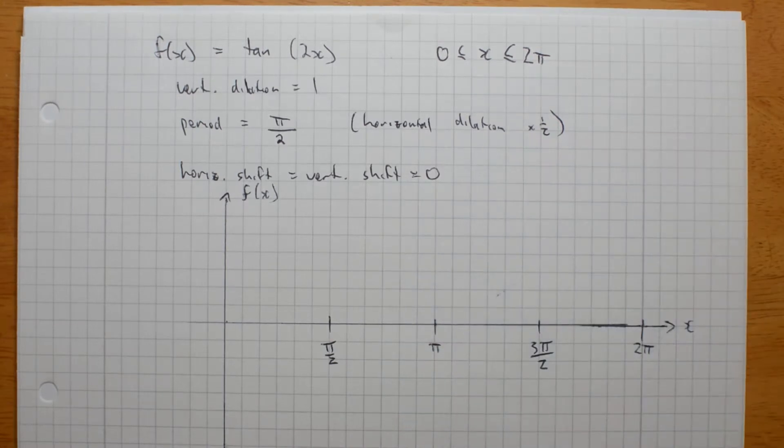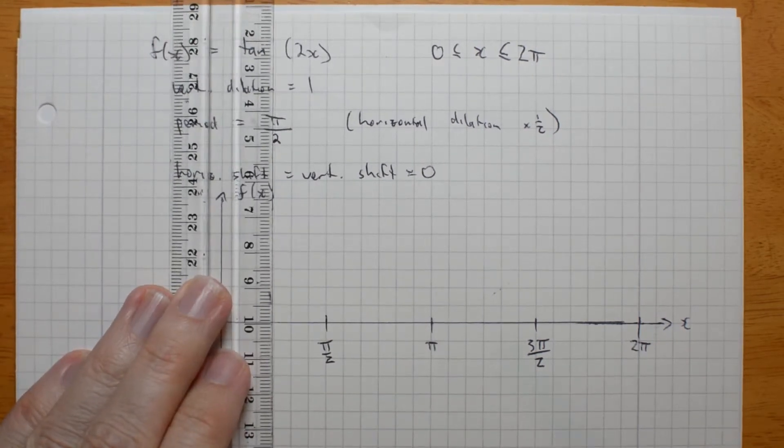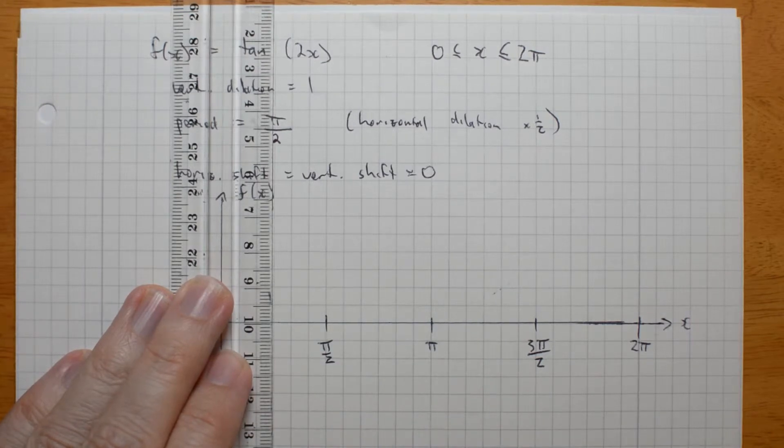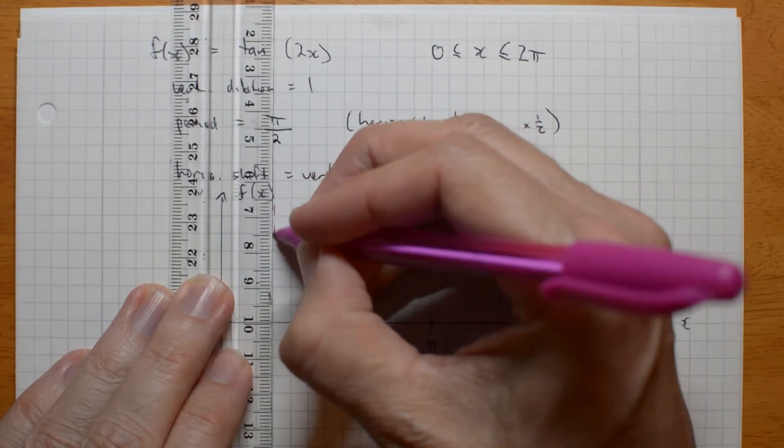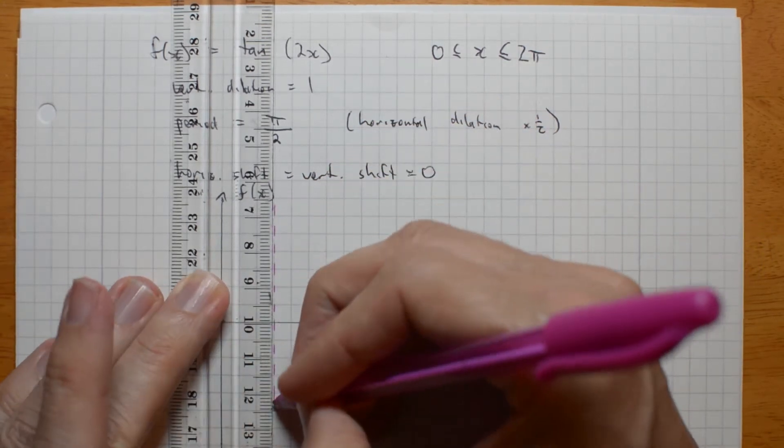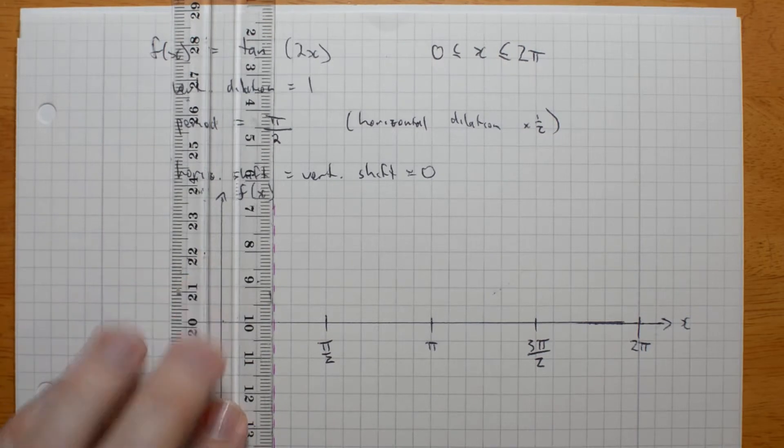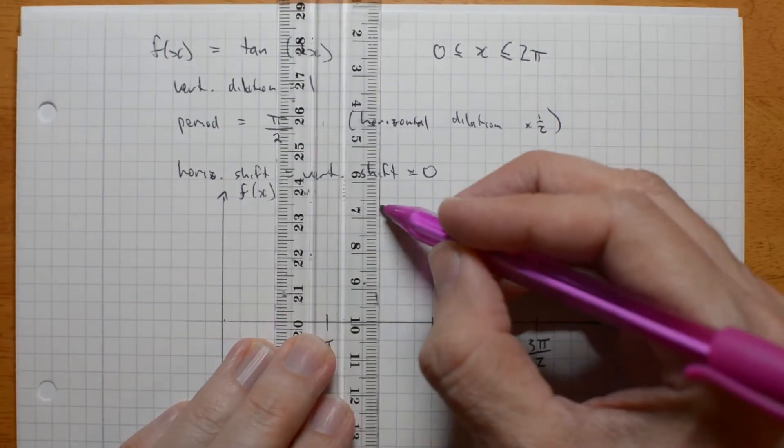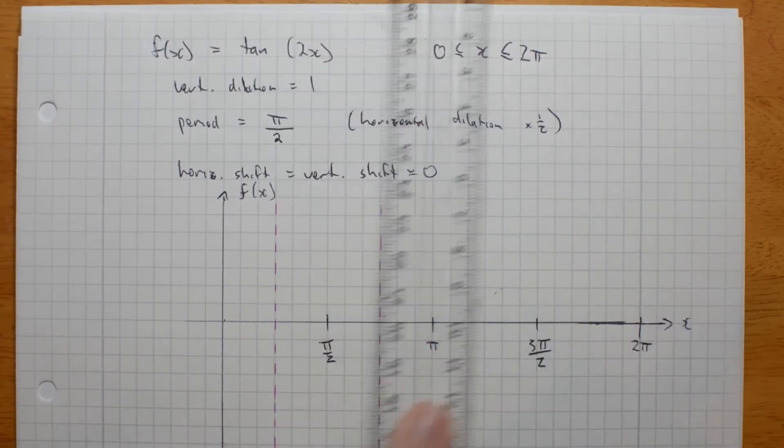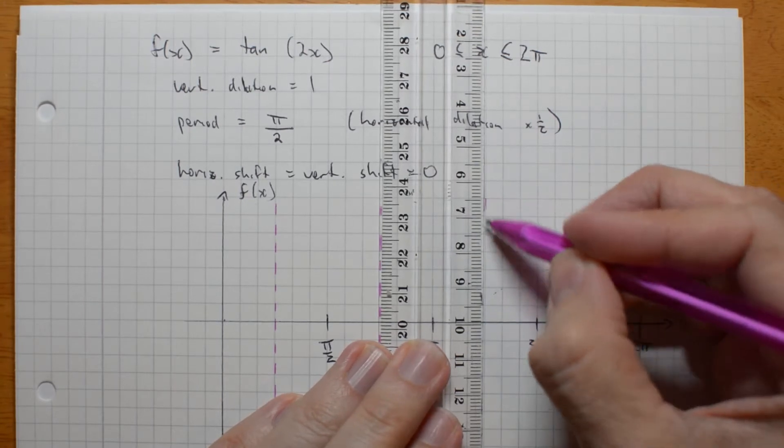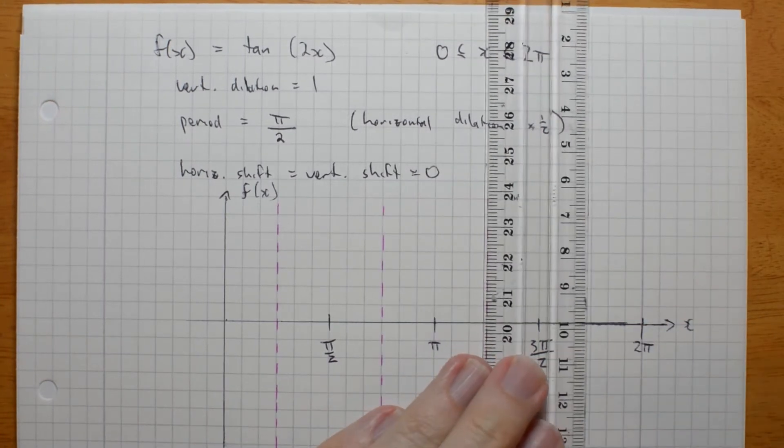So, already, I can actually mark my asymptotes. My asymptotes are going to be here. Twice as often. So, I'm going to try drawing a dashed line for my asymptotes. Just checking you can see that. So, then the next one's going to be here. There's my next asymptote. And my next one. And my last one.